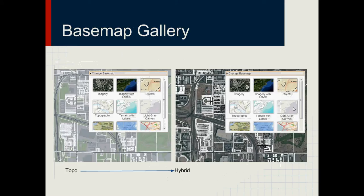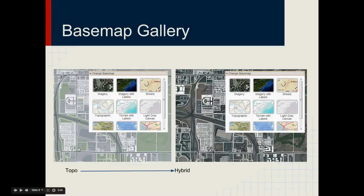Here's the base map gallery — Esri standard. I put all of them in there, including Bing Maps using the Bing map code. Here's an example going from topo to hybrid in the same area. You know how a base map works.